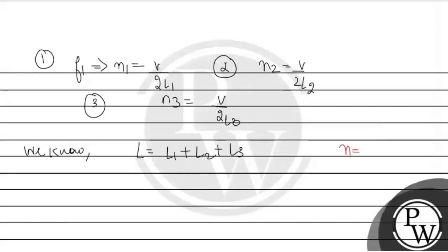As n equals v over 2L, therefore L equals v over 2n. Therefore, v over 2n equals v over 2n1 plus v over 2n2 plus v over 2n3.